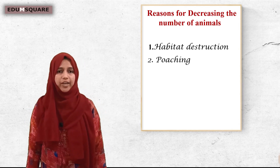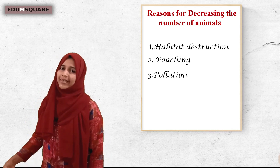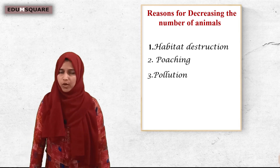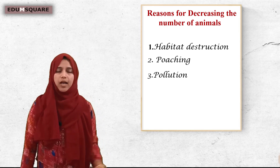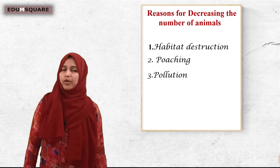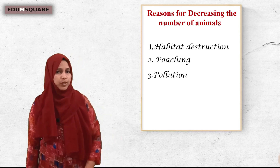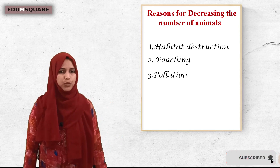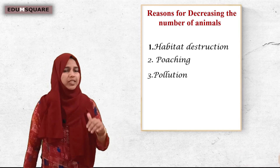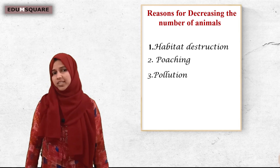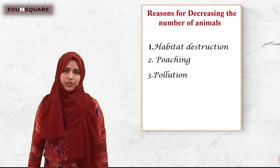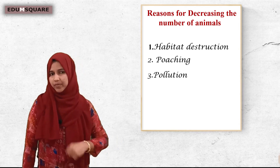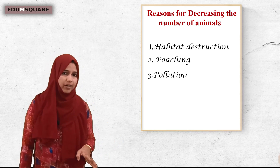The third reason is pollution. Dirtying of our surrounding is called pollution. Pollution is harmful for us, and it is also harmful for other animals. So if we pollute our surroundings, that is a threat for animal life too.